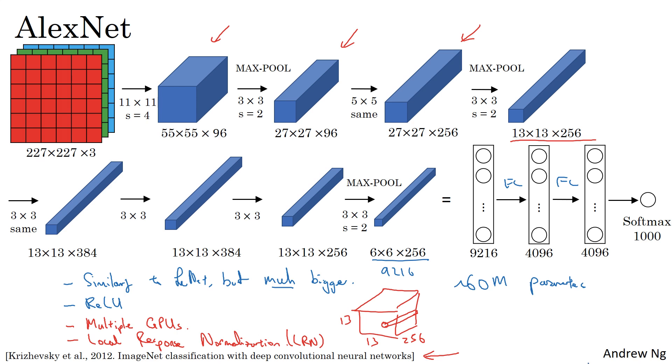Whereas AlexNet had a relatively complicated architecture with a lot of hyperparameters, let me show you a third and final example in this video called the VGG or the VGG-16 network. A remarkable thing about the VGG-16 network is that they said, instead of having so many hyperparameters, let's use a much simpler network where you focus on just having conv layers that are just 3 by 3 filters with a stride of 1 and always use same padding, and make all your max pooling layers 2 by 2 with a stride of 2. So one very nice thing about the VGG network was it really simplified these neural network architectures.